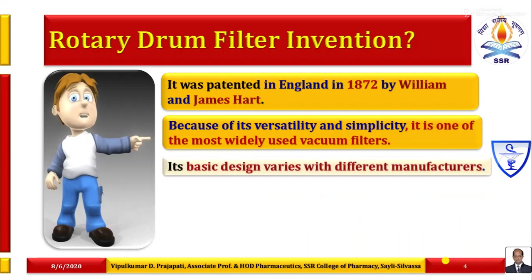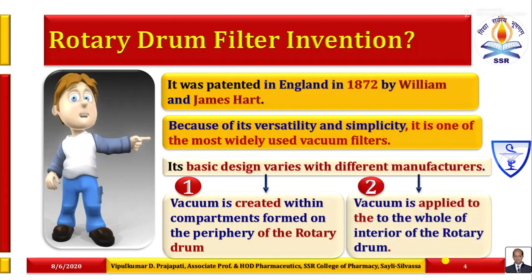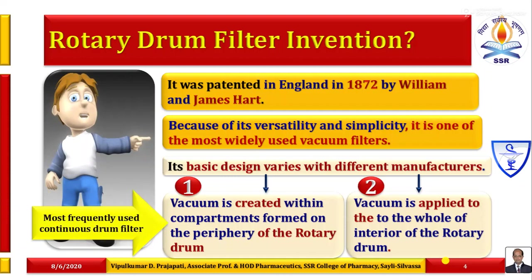Its basic design varies with different manufacturers. In the first variety, vacuum is created within compartments formed on the periphery of the rotary drum. In the second design, vacuum is applied to the whole interior of the rotary drum. The most frequently used continuous rotary drum filter is the first type — vacuum created within compartments on the periphery.